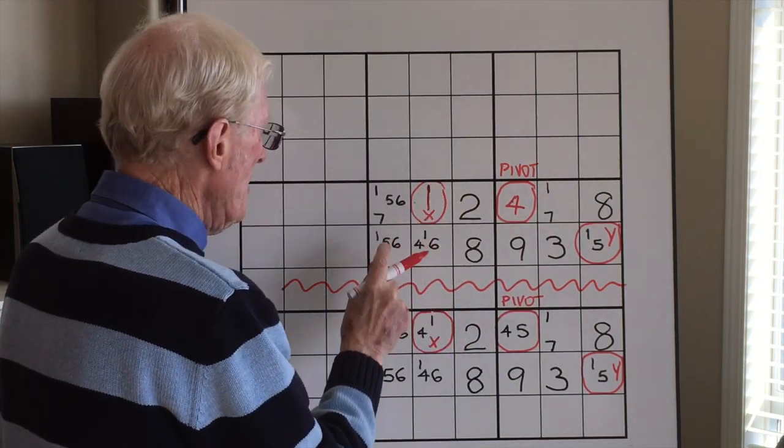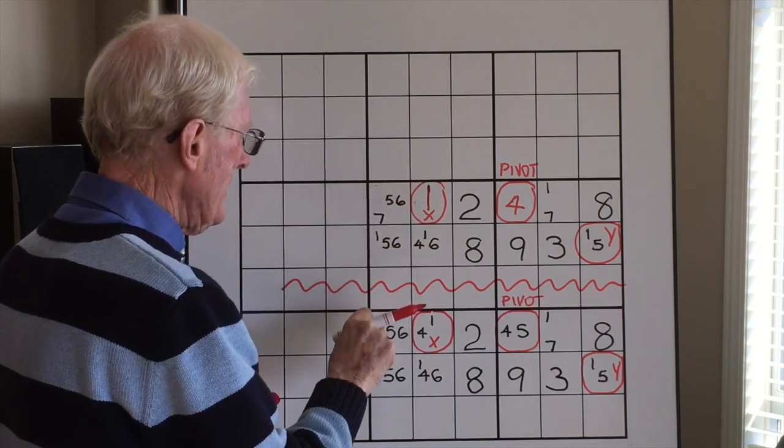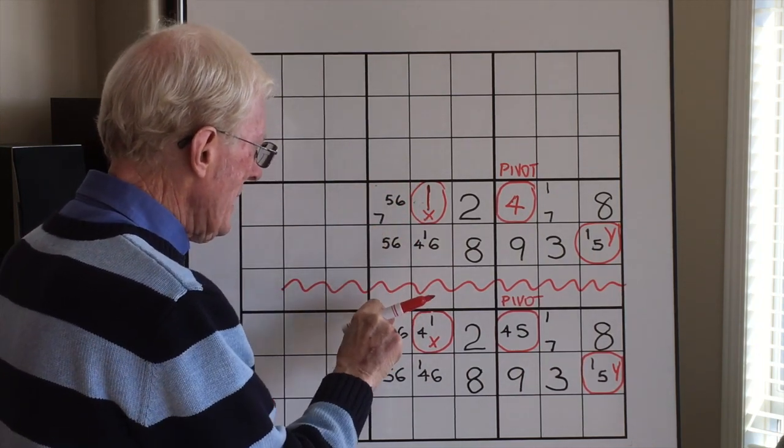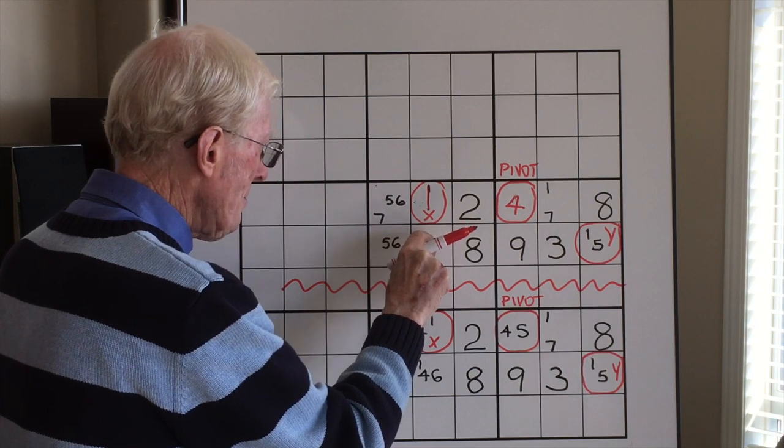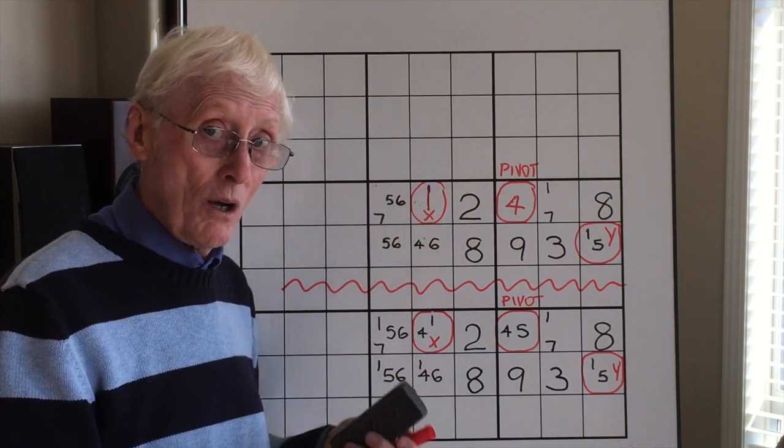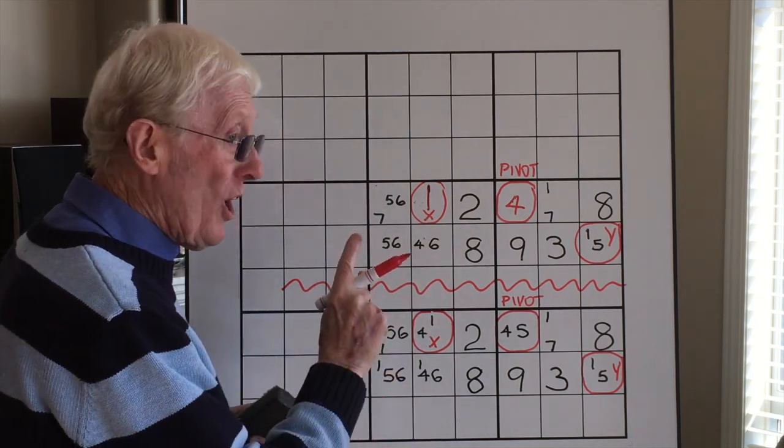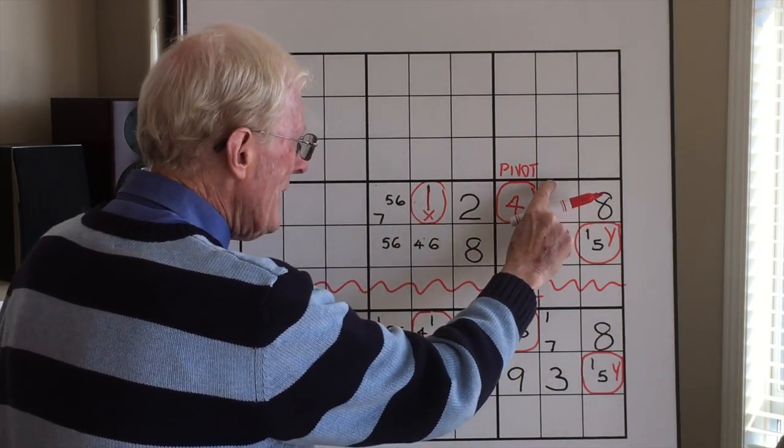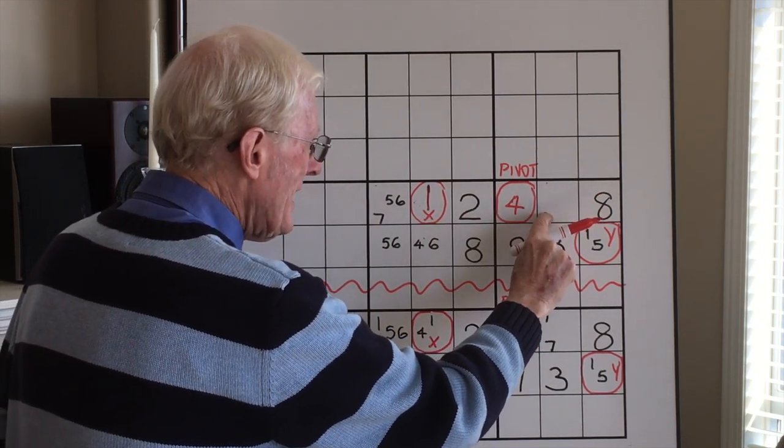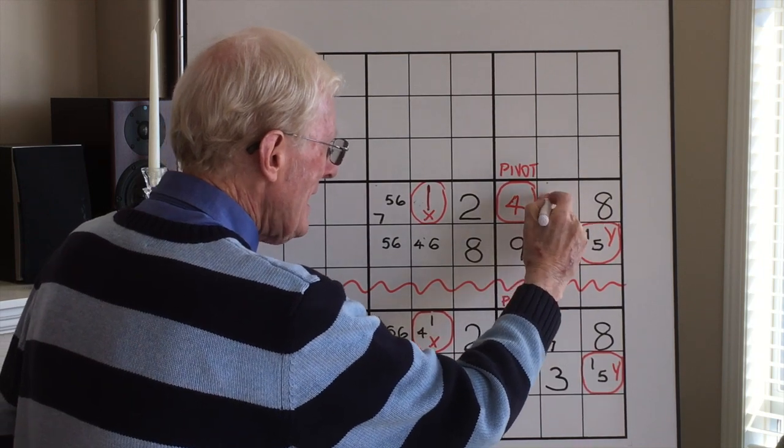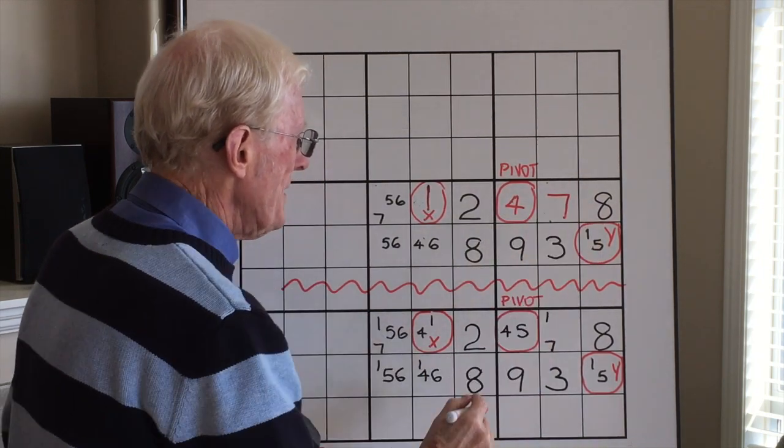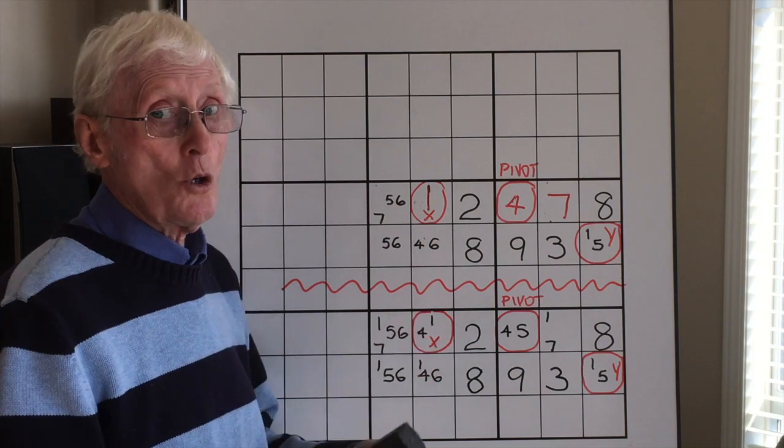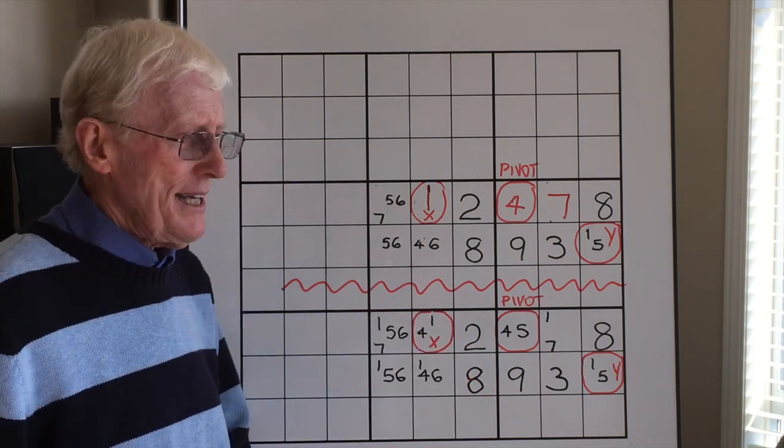Now what are the ramifications of that? First of all, because that's now a one, make it a big one. This one can be eliminated, this one can be eliminated, and this one can be eliminated because they are all in that block. But also because of that one, that one can be eliminated, and that leaves you with a seven. Isn't that neat? Then once you've got the seven, you look for other ramifications.